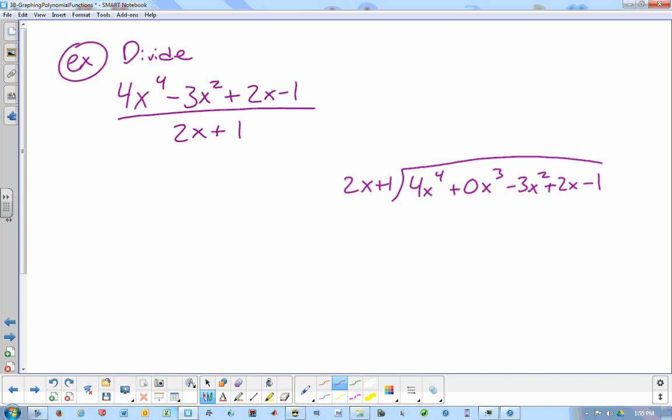What do we multiply 2x by to get 4x to the 4th? 2x cubed. So 2x cubed times 2x is 4x to the 4th. 2x cubed times 1 gives us 2x cubed. Subtract. These two terms disappear. That's great. Zero minus 2x cubed is negative 2x cubed. Bring down the minus 3x squared.